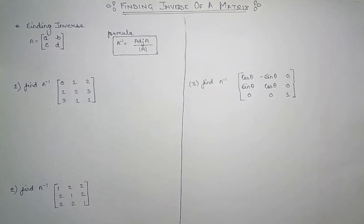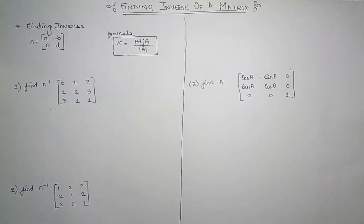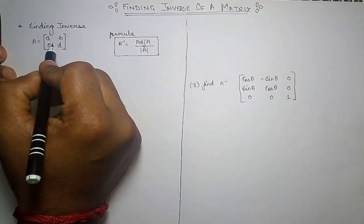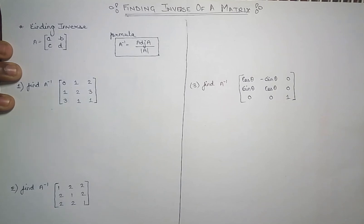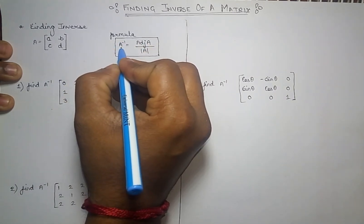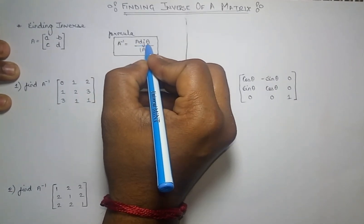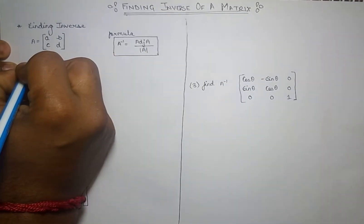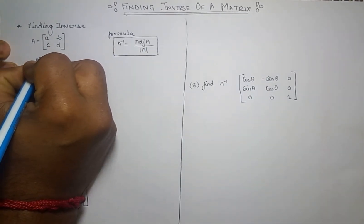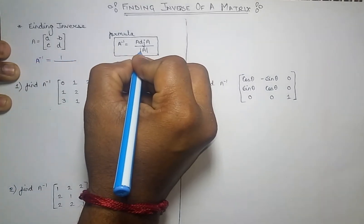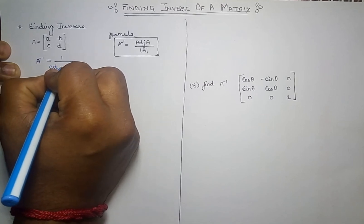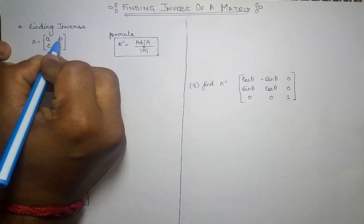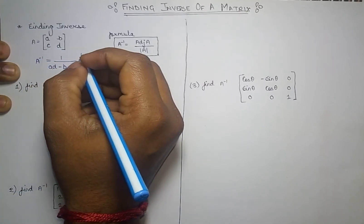In this video we are going to learn about finding the inverse of a matrix. For example, having a matrix with elements a, b, c, d — to find A inverse there is a formula: A inverse equals 1 over the determinant of A, multiplied by the adjoint of A. The determinant of this matrix will be ad minus bc.